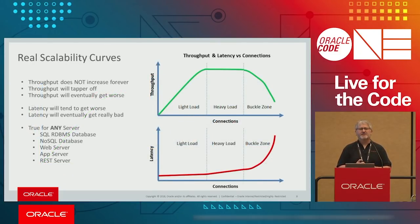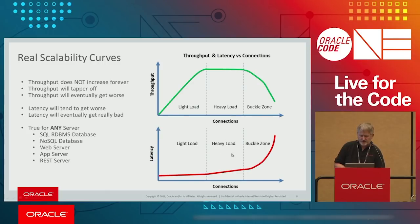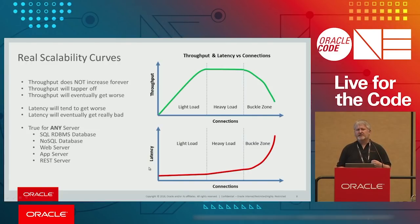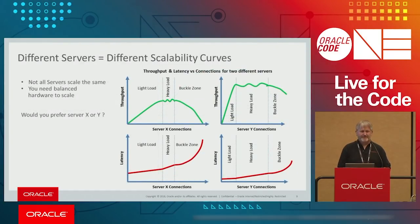When we look at any server, you have a scalability curve. To start off with, things scale — add more connections, you get more throughput. If you're lucky, it's linear. After a while, the throughput's going to drop off, flatten off, and eventually drop. Corresponding with that, you have increased latency. Most customers want high throughput with low latency. These scalability curves are fundamental — it happens with all servers: SQL database servers, NoSQL servers, web servers, REST servers, app servers. They all have the same characteristic.